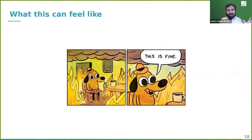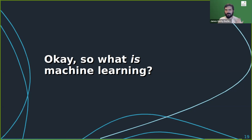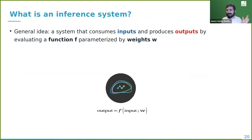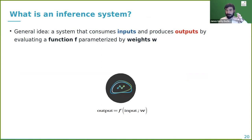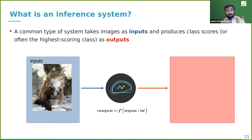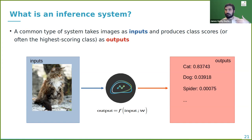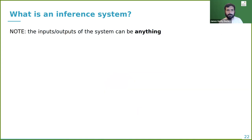Defining an inference system: something that consumes inputs and produces outputs by evaluating a function parameterized by weights. A common example is images as inputs with class scores as outputs — you put in an image of a cat and get scores: high for cat, low for spider or dog. You might then say you're pretty sure this image contains a cat.